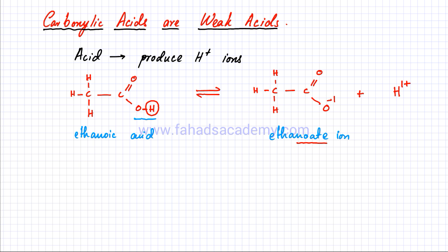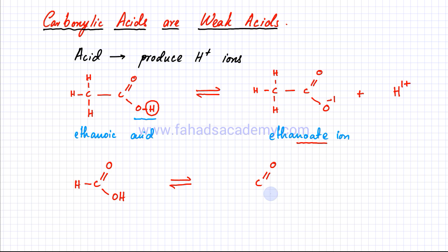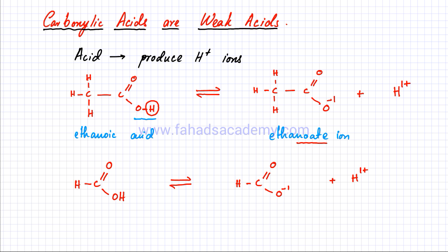Let's do another example — methanoic acid, which has just one carboxylic acid functional group: C double bond O, OH, and one hydrogen atom to complete the bond. This carboxylic acid breaks up and ionizes. The hydrogen atom in the OH leaves, the oxygen gets a minus one charge, and H⁺ ions are produced. That is how methanoic acid dissociates.